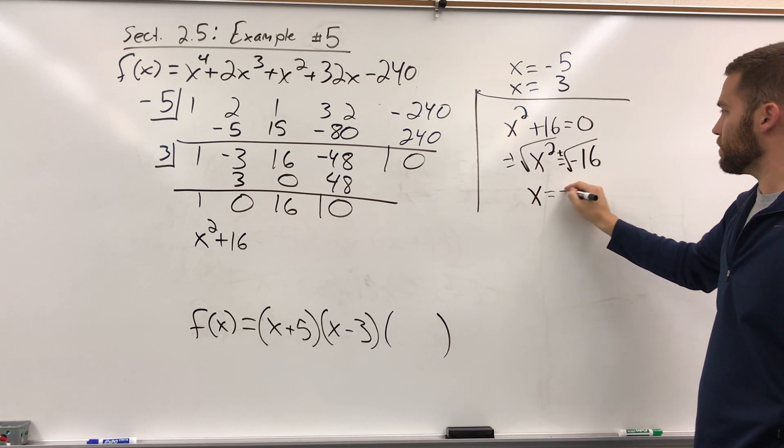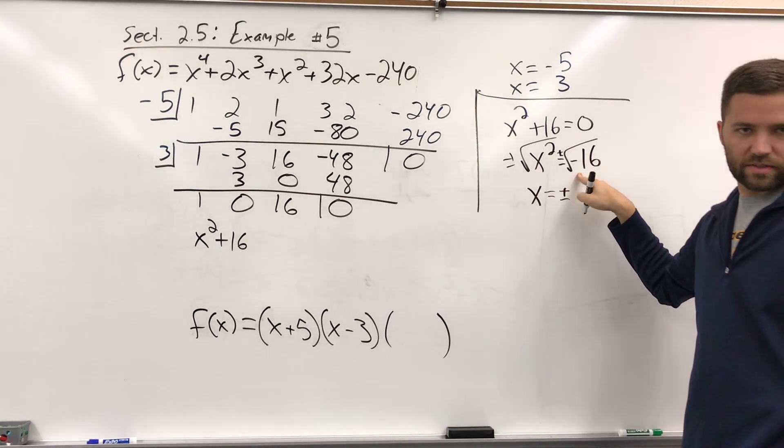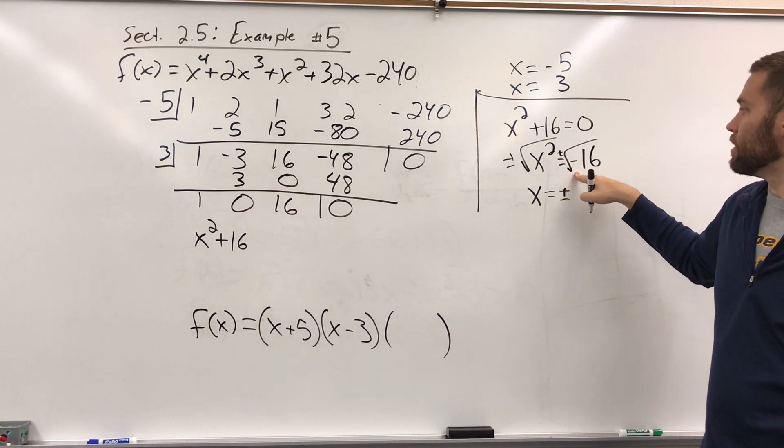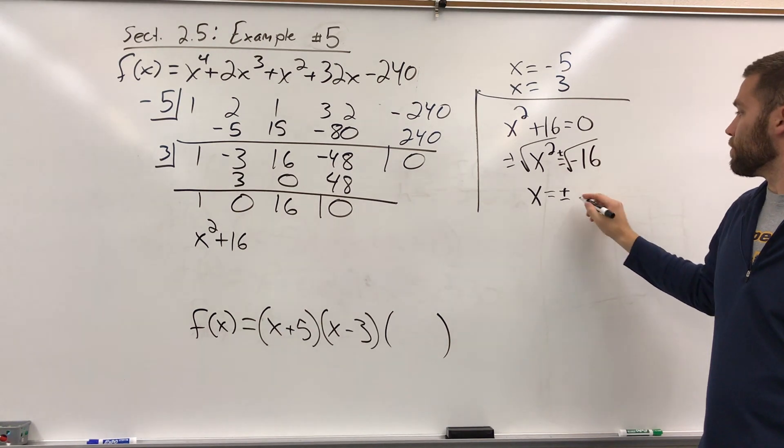So we end up with x equals plus or minus the square root of negative 16, that's going to be 4i. The square root of a negative number gives me the i, and then the square root of 16 is 4, so plus or minus 4i.